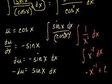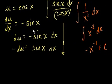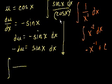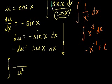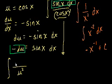Now let's rewrite the original integral. The denominator, cosine of x squared, becomes u squared, since u is cosine of x. And sine of x dx — as we just solved — is equal to minus du. So the integral becomes minus du over u squared.